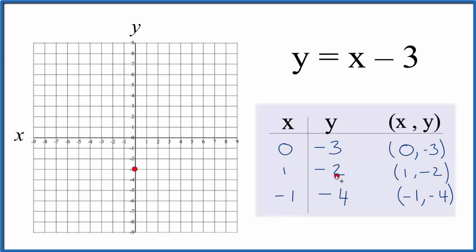Next, we have 1 and then minus 2. So we go x is 1, y is minus 2. And finally, we have x is minus 1, and y is minus 4. So minus 1, and then 1, 2, 3, 4.